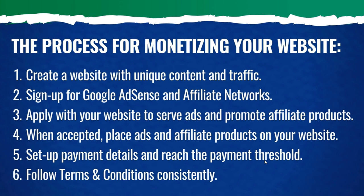And then you want to follow the terms and conditions consistently. Every affiliate network is a little bit different with payments. Some of them will pay you basically whatever you made for that month and you'll get paid for it next month. Some of them are about three months out — so sometimes what you're making in January, you're not getting paid for that until March or April, depending on the affiliate network.